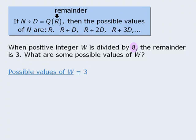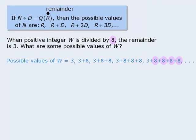Next, since we're dividing by 8, this is the divisor. So to find other possible values of w, we'll add multiples of 8 to the remainder of 3. So the next possible value of w is 3 plus 1 times 8. Then 3 plus 2 times 8, then 3 plus 3 times 8, then 3 plus 4 times 8, and so on.